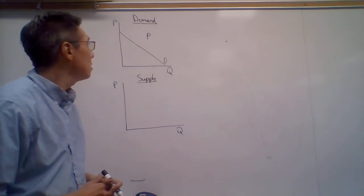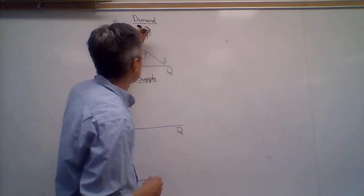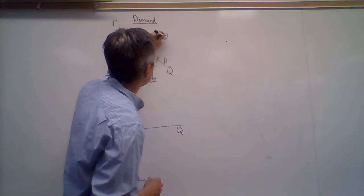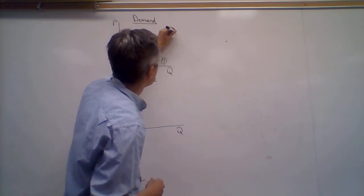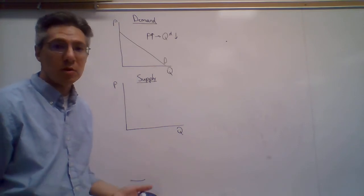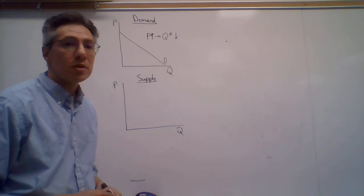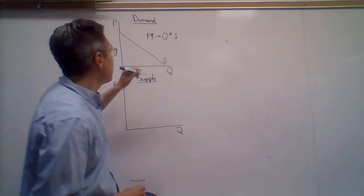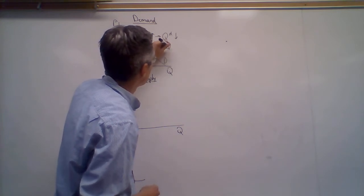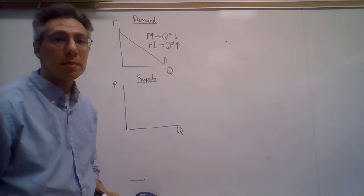So in terms of here, we have P representing the price. When price goes up, we say that the quantity demanded goes down. That kind of makes sense—when something is more expensive, people are going to demand less of it. And then the opposite, of course, is the case: price goes down, quantity demanded is going to go up.